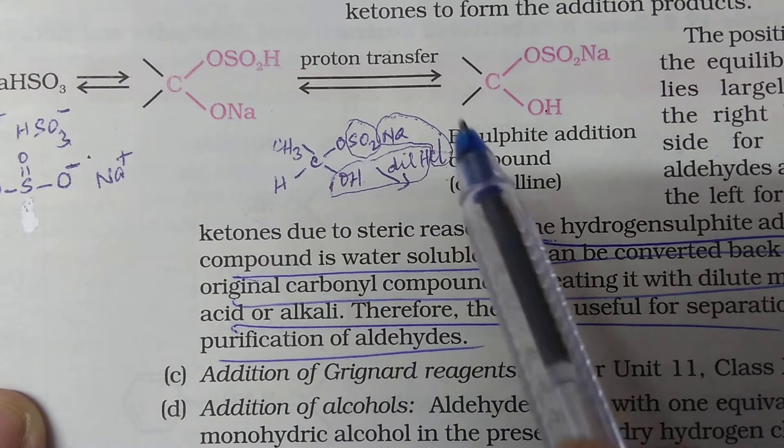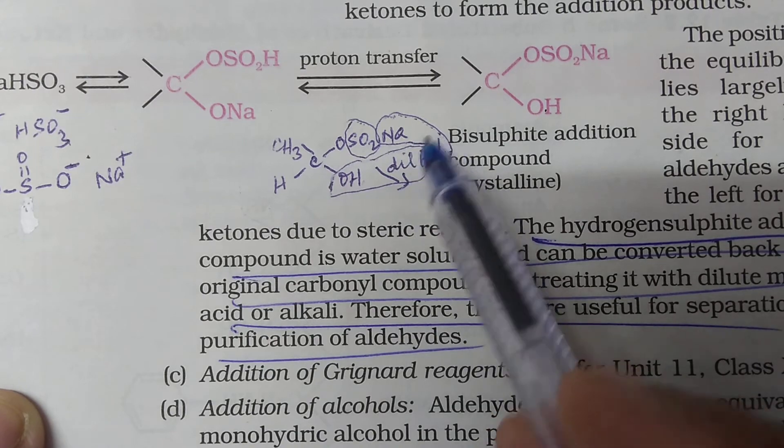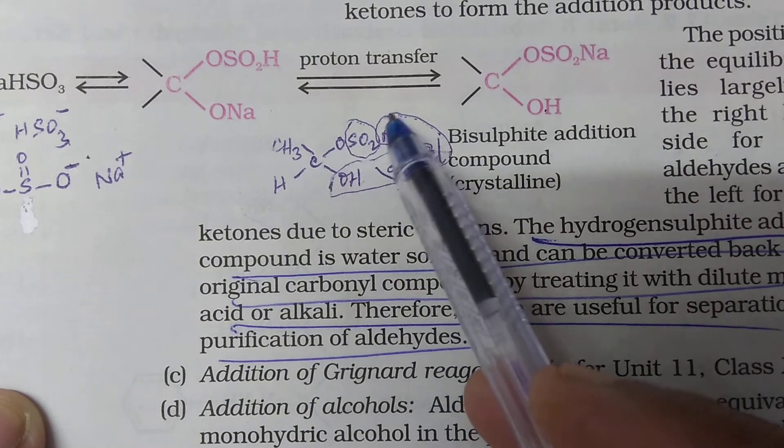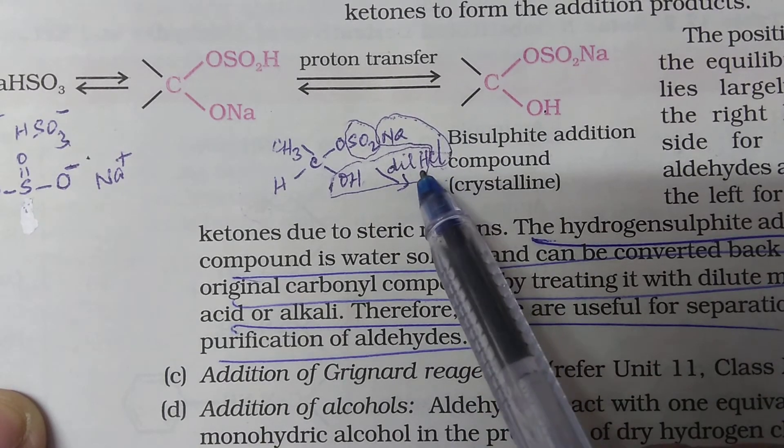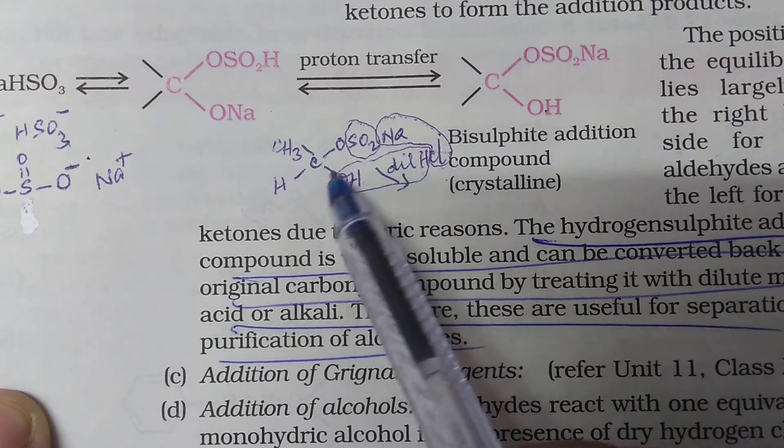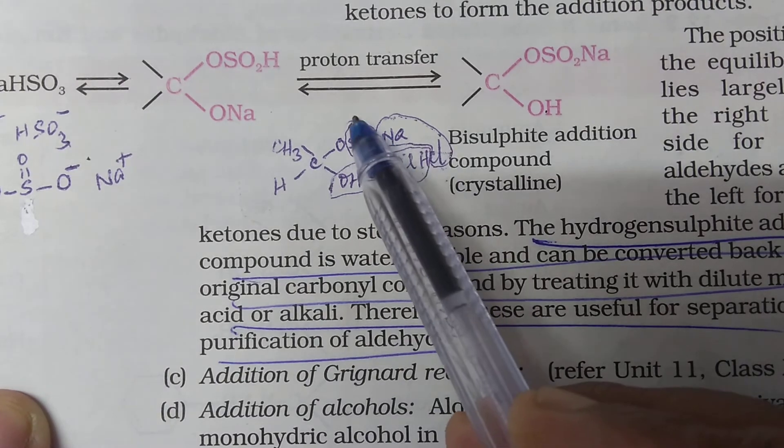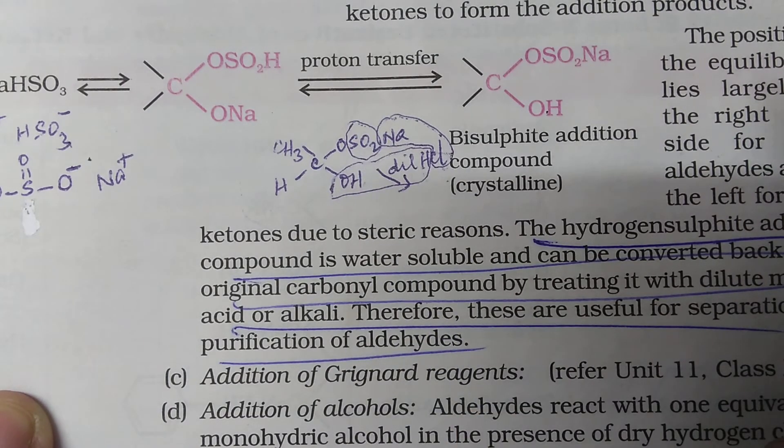Supposing I am adding dilute acid. Now, from here, Cl and Na. This will go out as NaCl. Then, the hydrogen of HCl and this OH will get out as water. And this will get out as SO2.